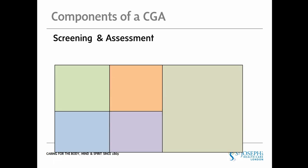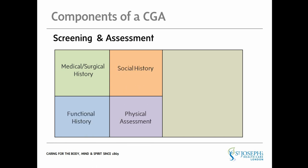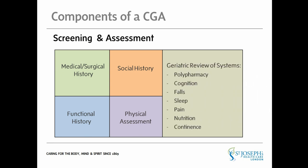A comprehensive geriatric assessment includes medical, surgical, social, and functional history-taking and a physical assessment, as well as a clinical review of common geriatric syndromes, which include polypharmacy, cognition, falls, sleep, pain, nutrition, and continence.